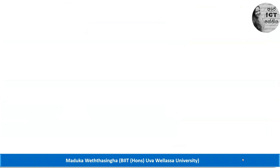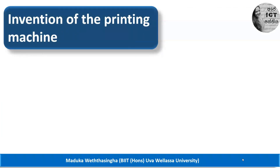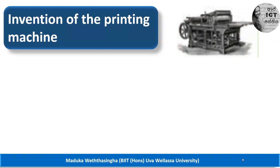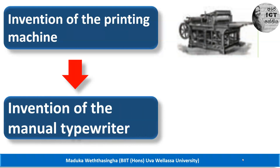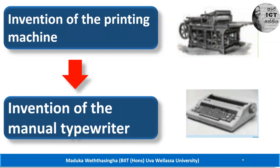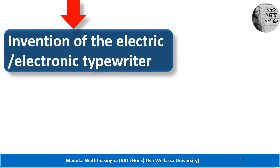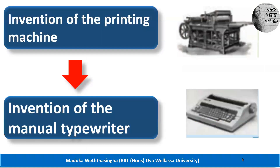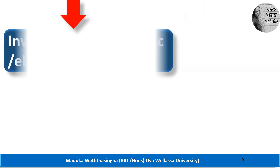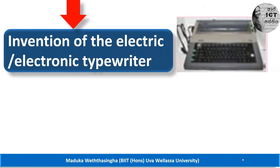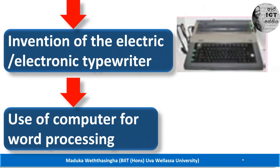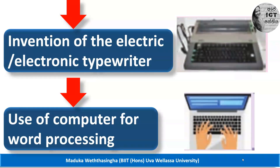In the next stage, they invented the printing machine. After that, as people developed further, they invented the manual typewriter. Then people invented the electric or electronic typewriter. Finally, they began using computers for word processing, just as we do today.